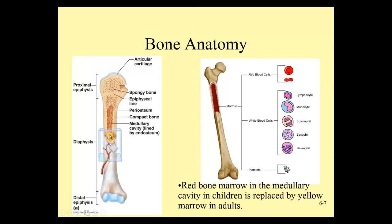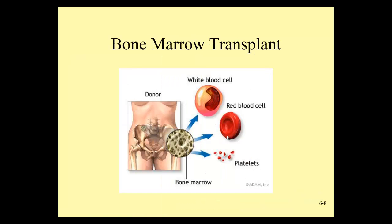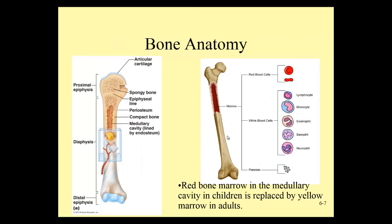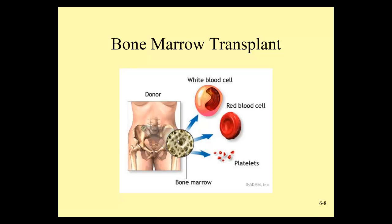Red marrow contains red blood cells, white blood cells for immune function, and platelets for stopping bleeding — a very important function, especially in developing children. In leukemia, abnormally growing white blood cells crowd out red blood cells, causing low immunity, anemia, easy bruising, and poor oxygen delivery. Some patients receive a bone marrow transplant. Because adults don't have red marrow in the shafts of their long bones, healthy donor cells for a transplant are found in the ilium — the hip bone — where red marrow persists in the spongy bone.